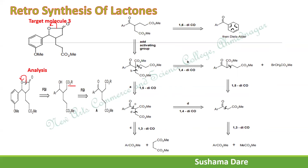Examining the intermediate: numbering gives positions 1, 2, 3, 4 — giving a gamma-hydroxy carbonyl compound. Another relation between the two carbonyl groups, numbered 1 through 6, gives a 1,6-dicarbonyl compound. So there are two relations: a gamma-hydroxy carbonyl compound and a 1,6-dicarbonyl compound.